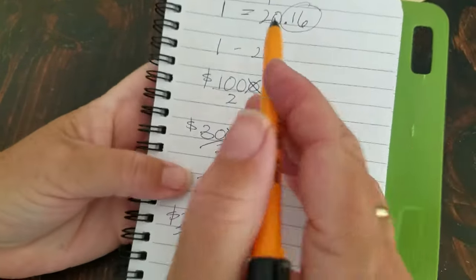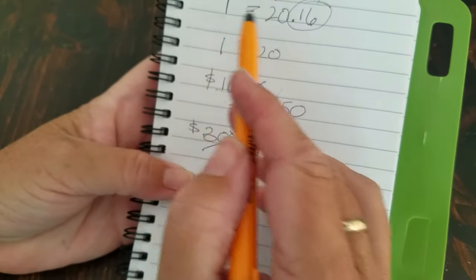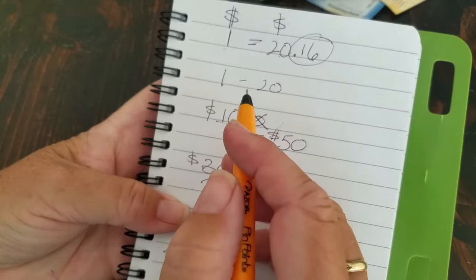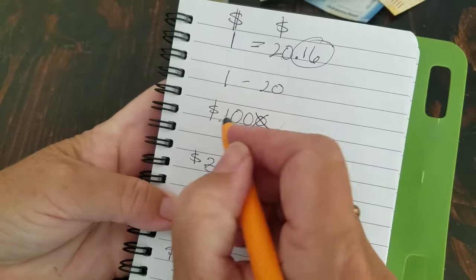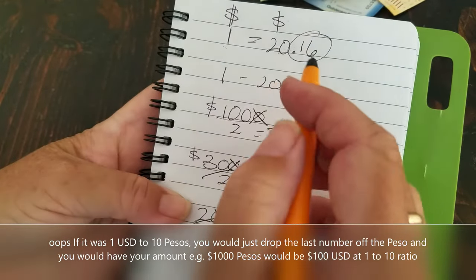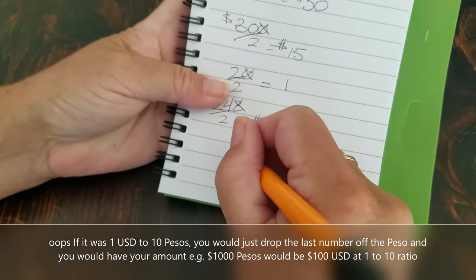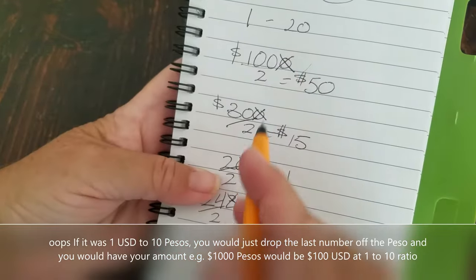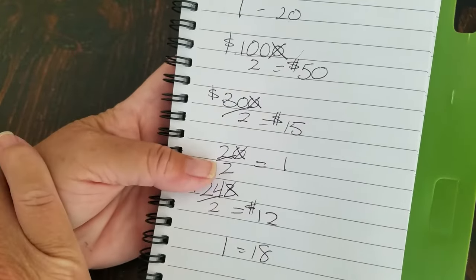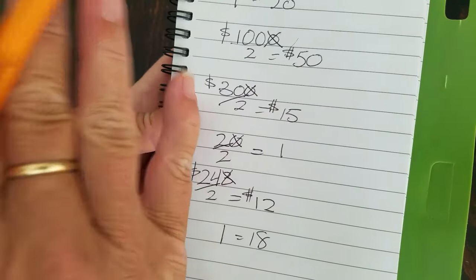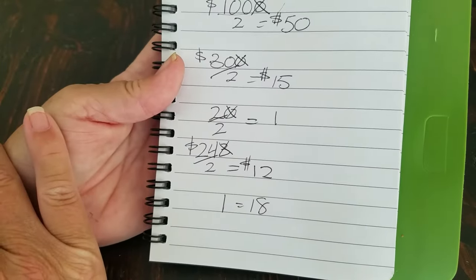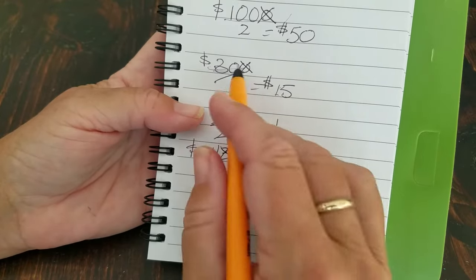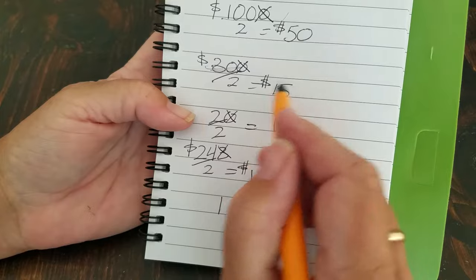So this will hold true as long as the peso is 20 pesos to 1 US dollar. If it was 1 to 10, you would just divide this by half. But if you get down to like, you know, 1 peso equals like 18 dollars, then you could still use this math, but it gets a little more complicated. Or your rough estimate will just be rougher. But you know, when you're looking at 300 pesos, $15, that's pretty easy to do. And you're in the ballpark.